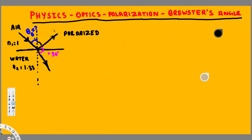The question is asking: what is the Brewster's angle? Let's see how we can find it. First of all, we have to know that the incident angle and reflected angle are always equal. So we can say this Brewster's angle theta B is equal to the reflected angle theta 1.